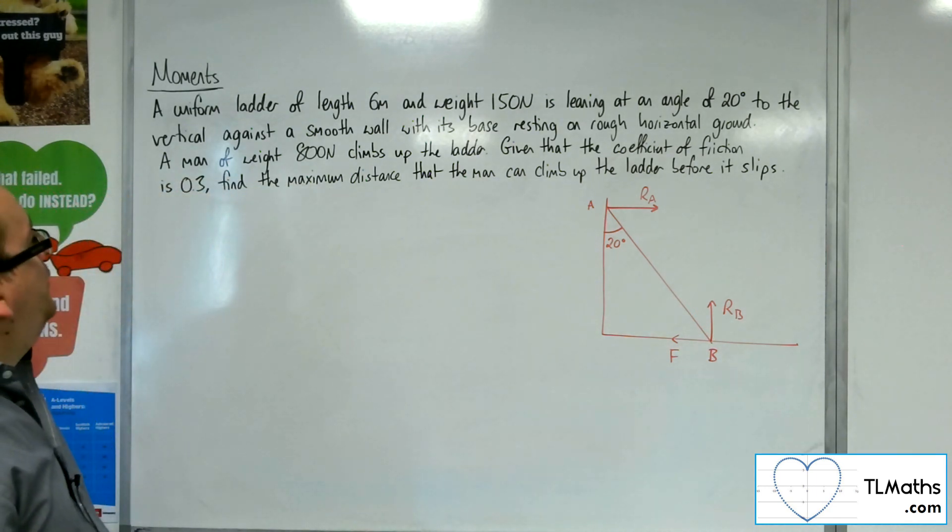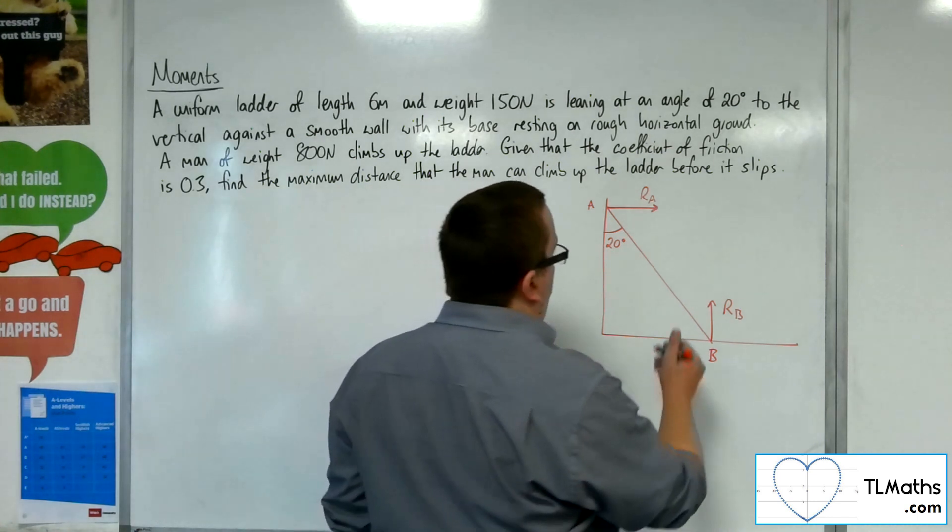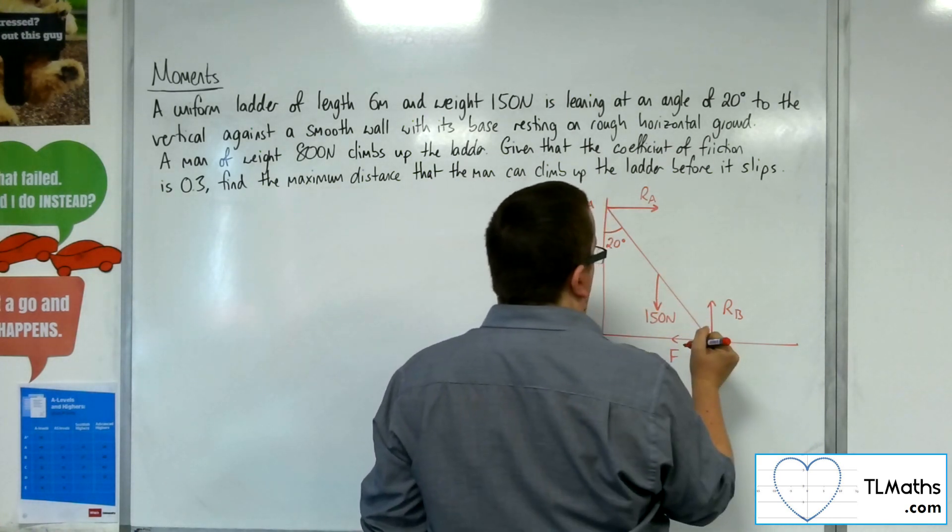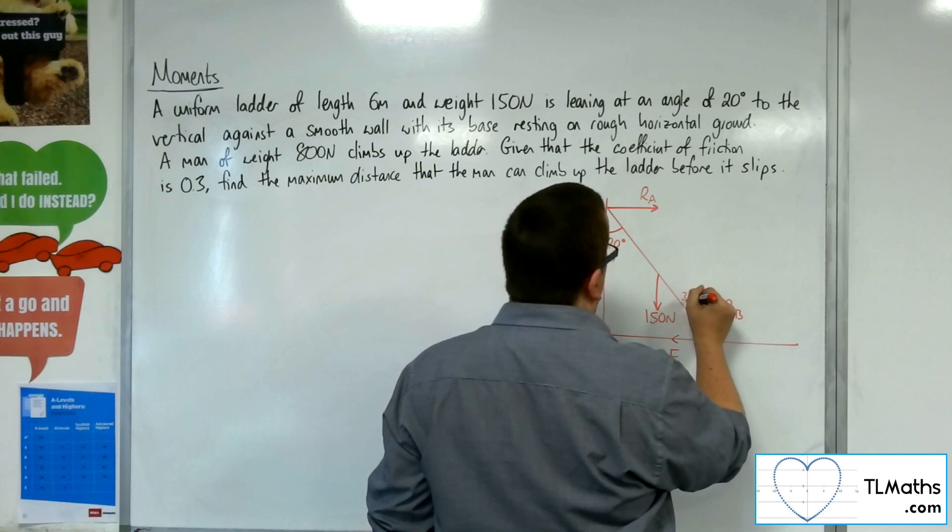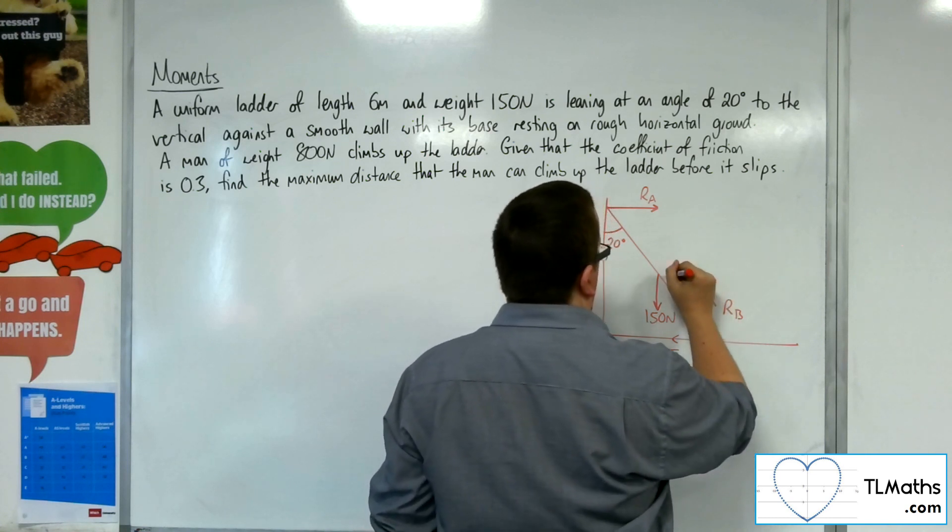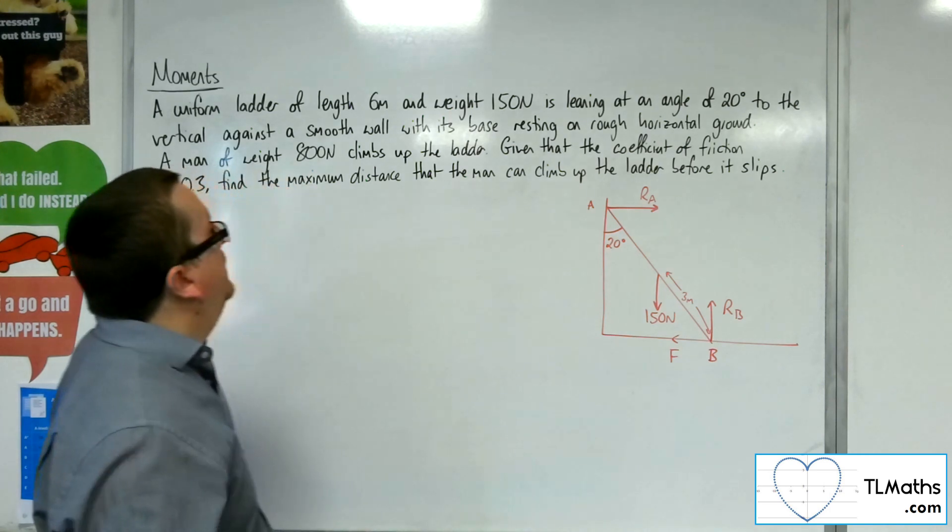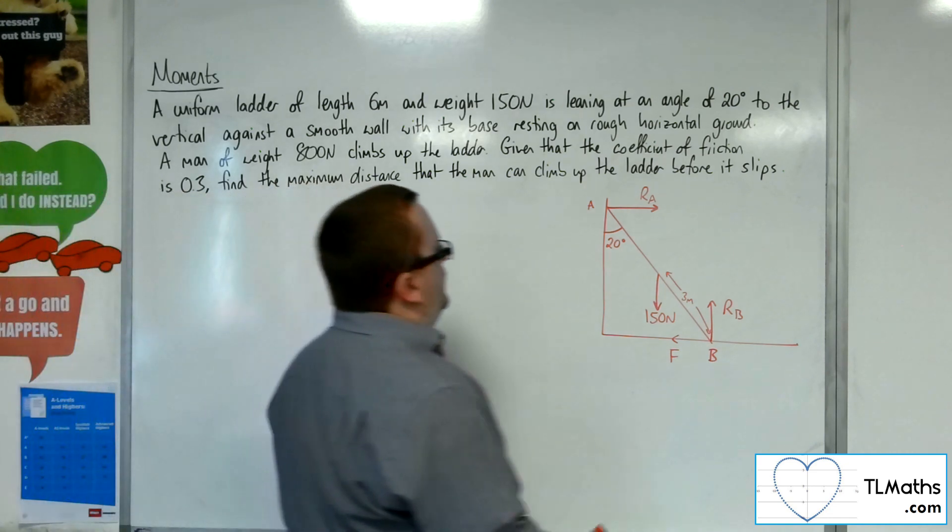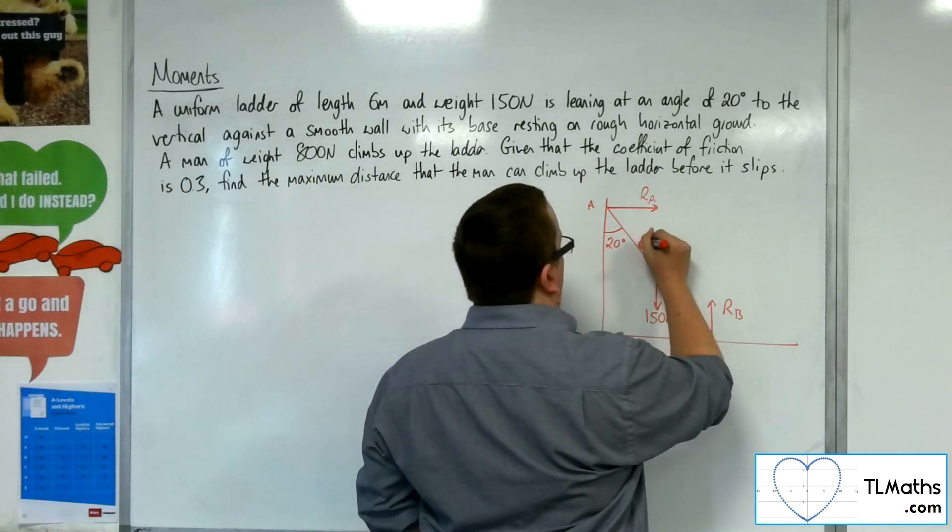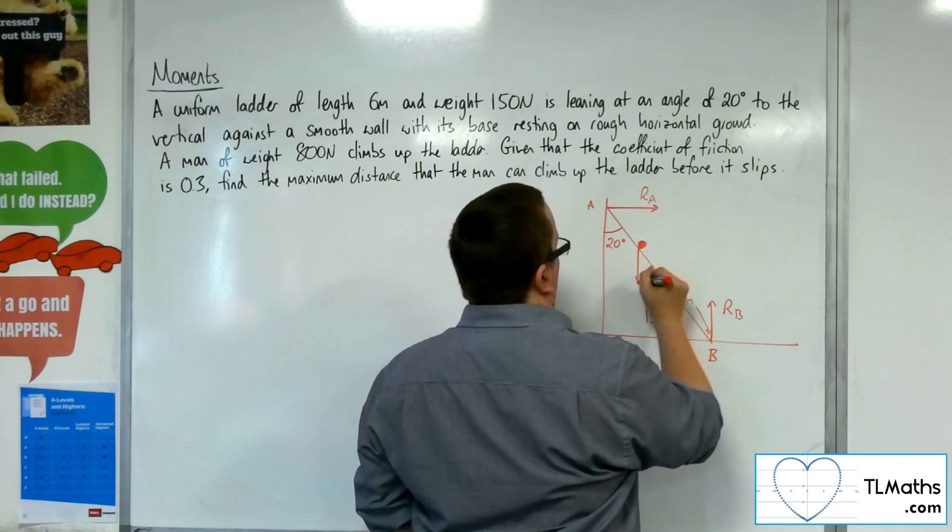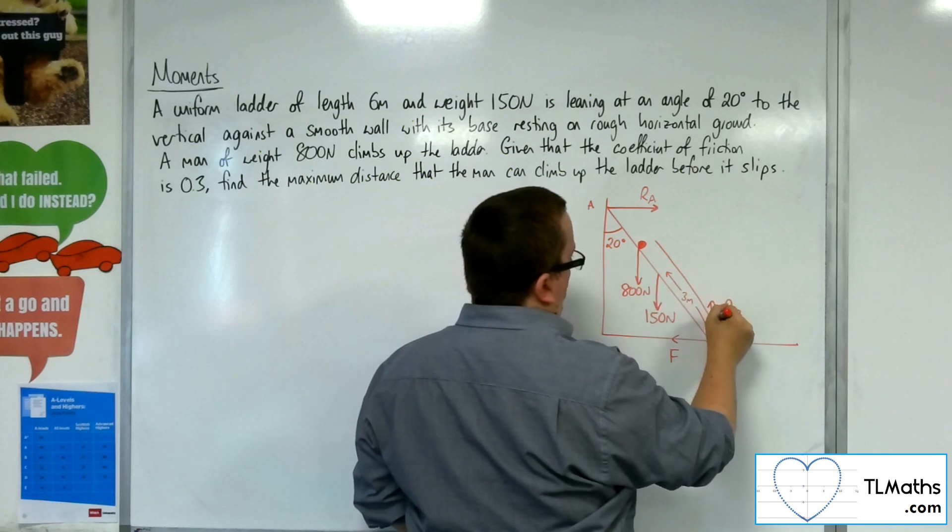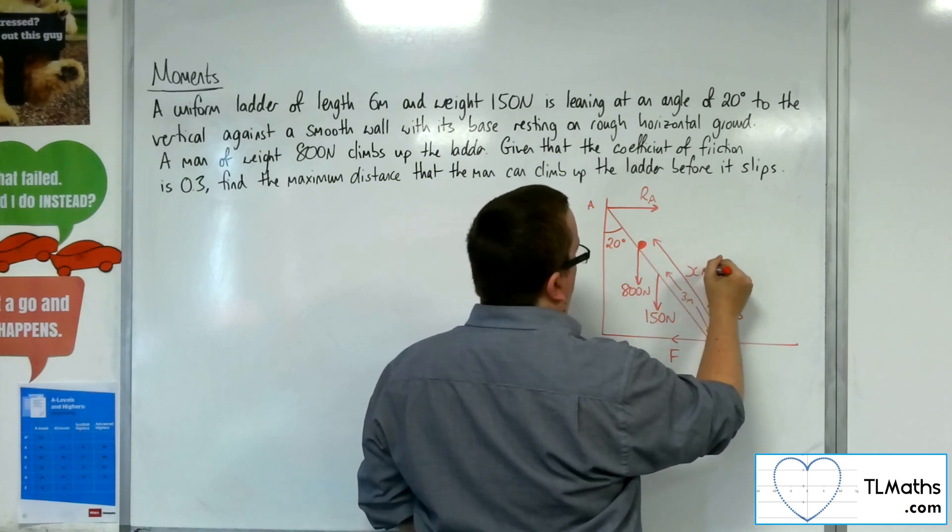The uniform ladder is of length 6 meters and weight 150 newtons. So center of mass right in the middle. 150 newtons, and that's 3 meters. A man of weight 800 newtons climbs up the ladder. So we've got this person, which I'll represent as a particle, with a weight of 800 newtons. And its distance up the ladder, I'm going to call x meters.